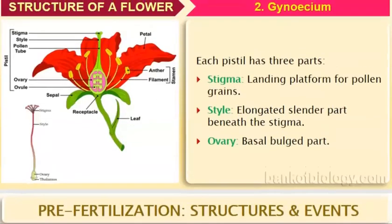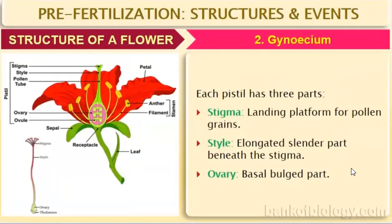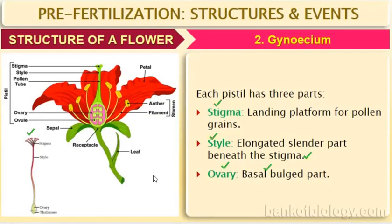The structure of the gynoecium: gynoecium means the pistil. The pistil has three parts. Stigma is the part where the pollen grains land. Style is the elongated and slender part beneath the stigma. And ovary is the basal bulged part. Inside the ovary there are ovules present.